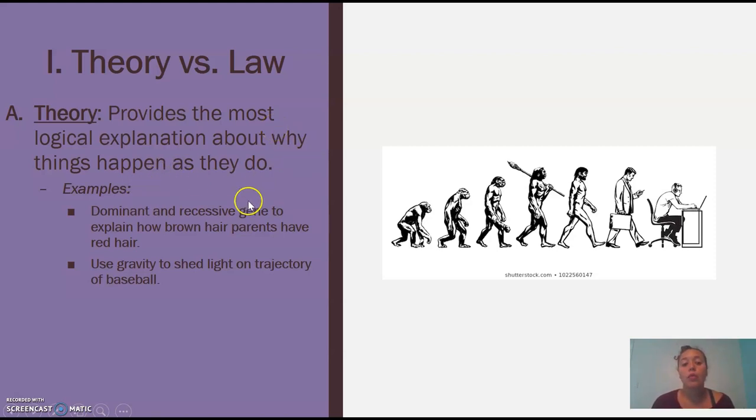Example would be like you have brown hair. Why? Because of dominant and recessive genes. Why is a baseball falling the way it is because of gravity. So just always the why. So theory, I think if you remember that, theory is the why and explains why things happen as they do.